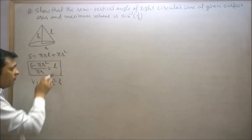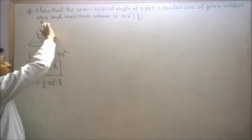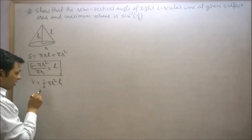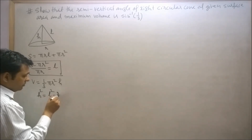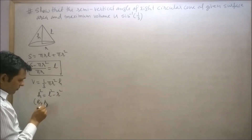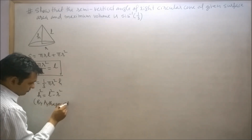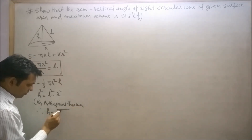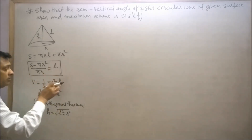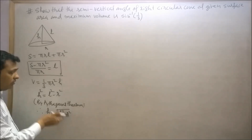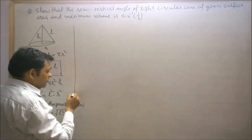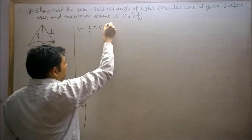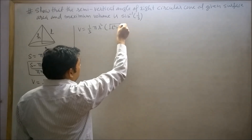Now convert h (small x) in terms of l. We know that l² = h² + r² by the Pythagorean theorem, so h² = l² − r², therefore h = √(l² − r²). Replace x by √(l² − r²) in the volume formula. So V = (1/3)πr²√(l² − r²).